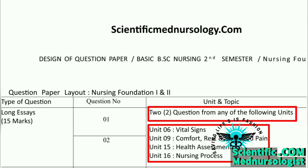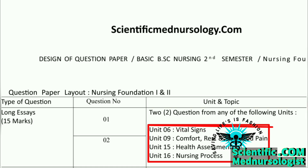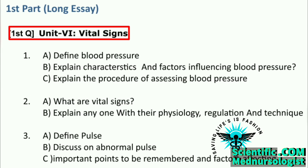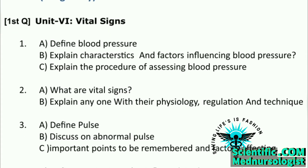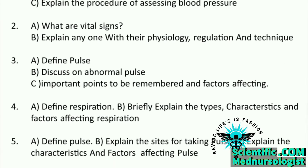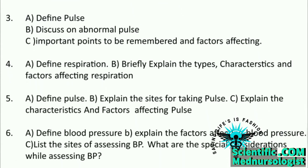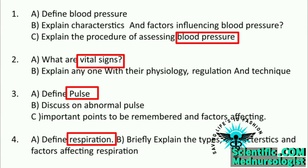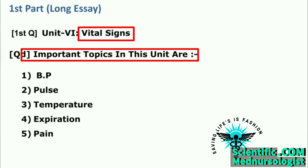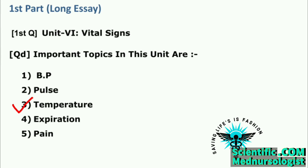Out of these 4 standard questions, only 2 will come in the degree examination, and those 2 standard questions will contain only 1 ordinary question each from the unit of that particular standard question. The 1st standard question is Unit 6 — Vital Signs. It is not necessary that only these questions will be asked in your degree examination, but questions may be repeated from these topics. Important topics in Vital Signs include: BP, pulse, temperature, and respiration.